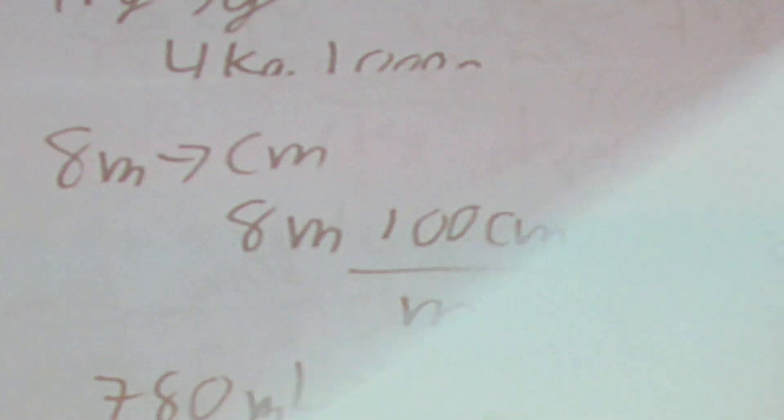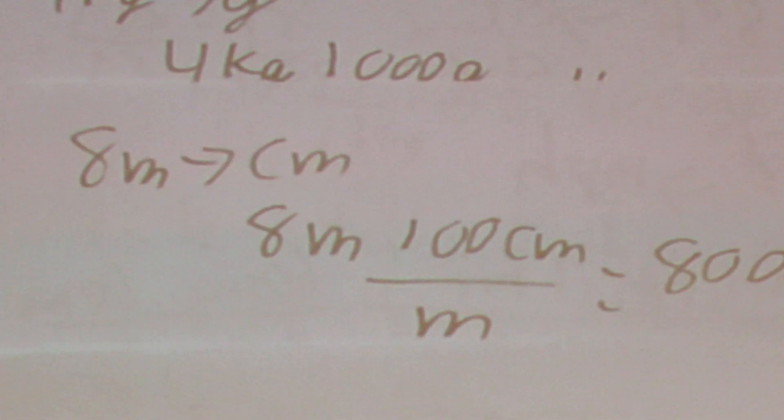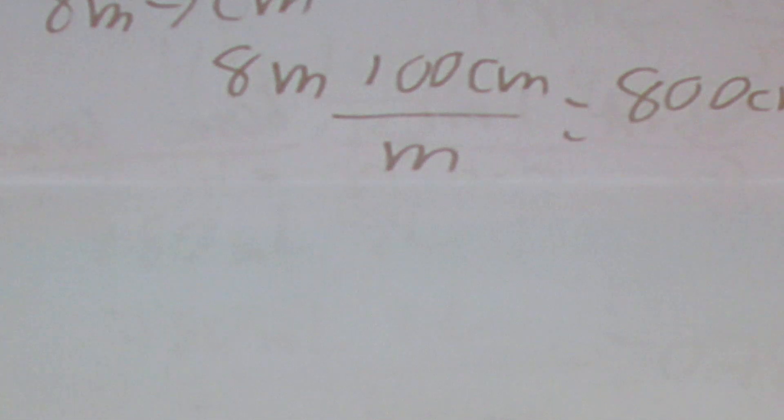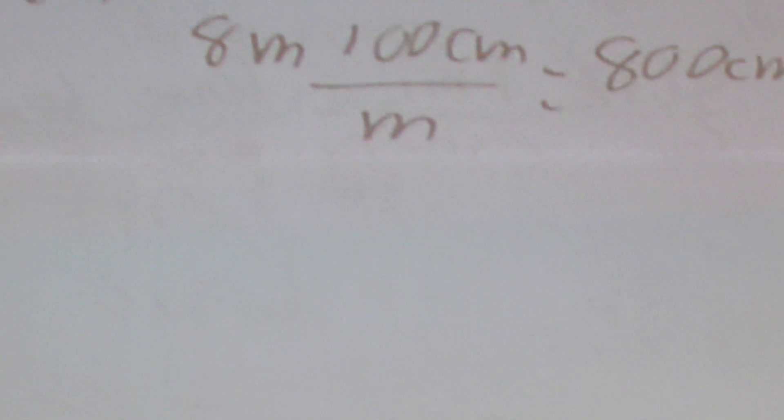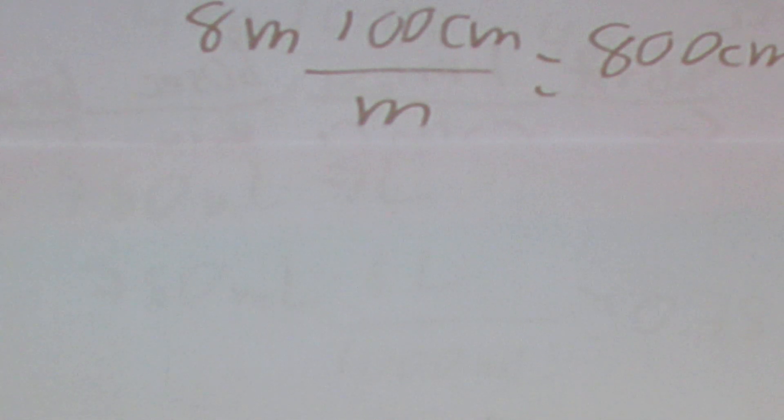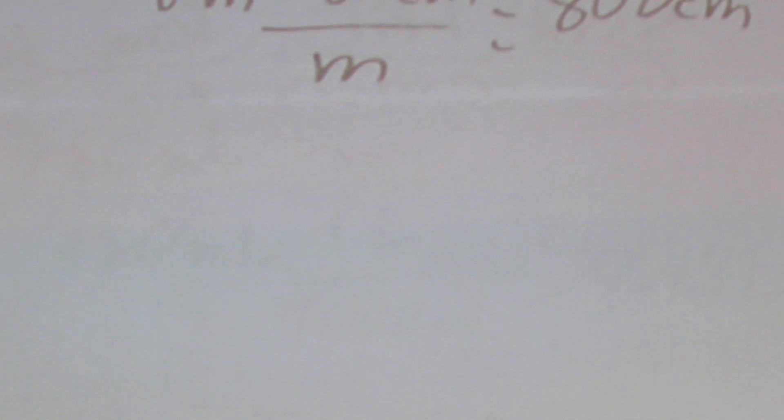Next we'll do some metric system conversions, which are pretty easy — we're just multiplying or dividing by factors of 10. If we need to go 8 meters to centimeters, there are 100 centimeters per meter, so 8 times 100 equals 800 centimeters.